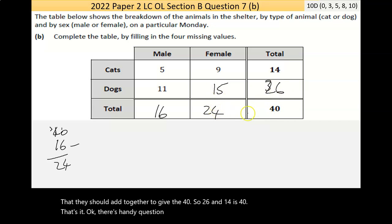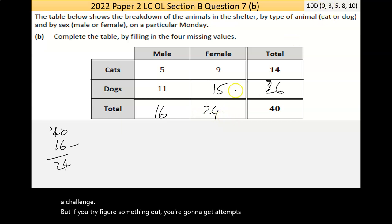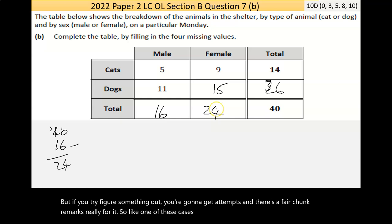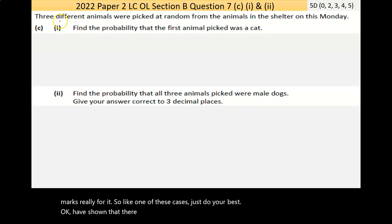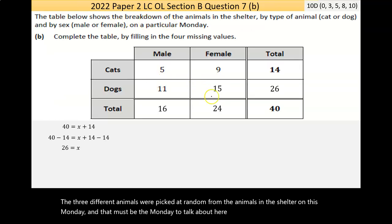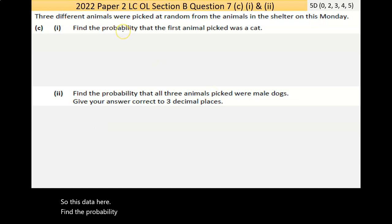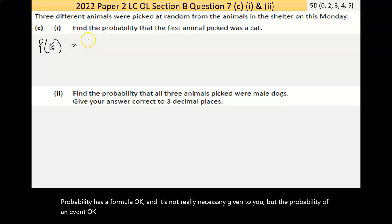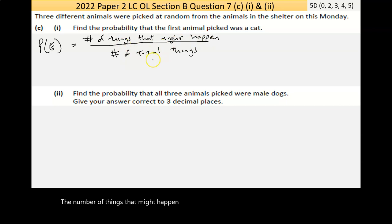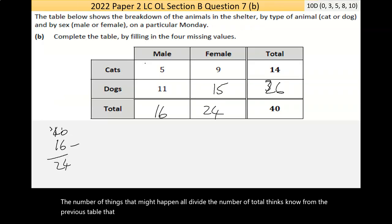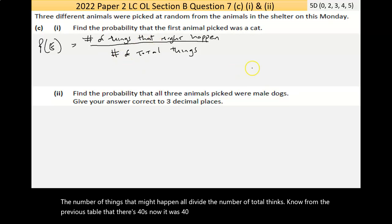It's a handy question, but again, you have to kind of backwork it, which can be a challenge. But if you try to figure something out, you're going to get attempts. And there's a fair chunk of marks really for it. So in one of these cases, just do your best. I think I've shown that there. Now, three different animals were picked at random from the animals in the shelter on this Monday. Now, that must be the Monday we're talking about here. So this data here. Find the probability that the first animal picked was a cat.